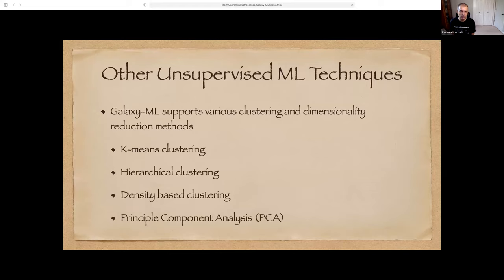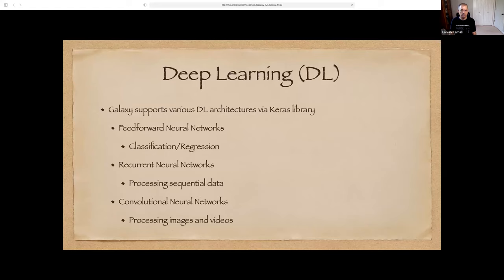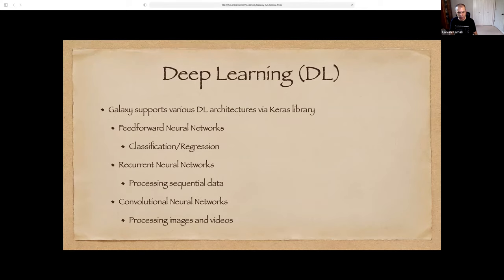Galaxy ML also supports various unsupervised machine learning techniques, including clustering and dimensionality reduction methods such as K-means clustering, DBSCAN density-based clustering, and principal component analysis. Additionally, Galaxy supports various deep learning architectures via the Keras library. Tutorials have been written on feed-forward neural networks, recurrent neural networks, and convolutional neural networks. Convolutional neural networks are used for image and video processing; recurrent neural networks are used for sequential data, whether time-based or order-based; and feed-forward neural networks are used for more traditional classification and regression problems.